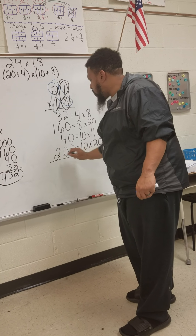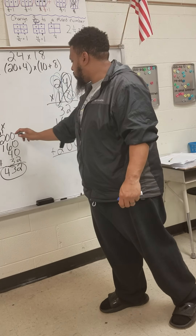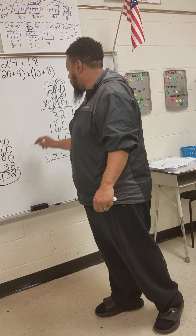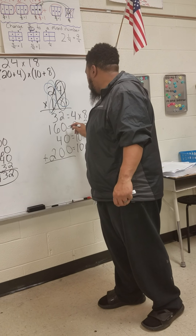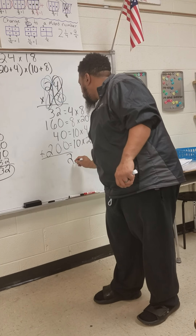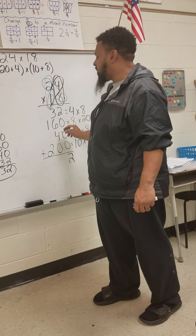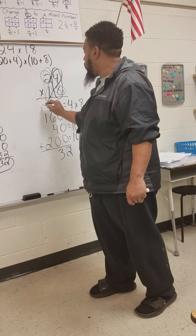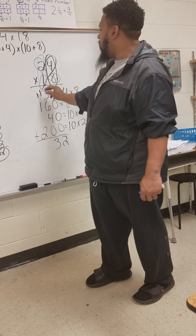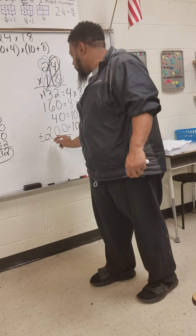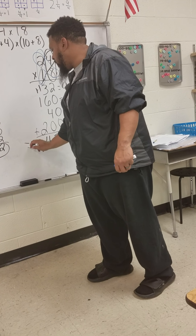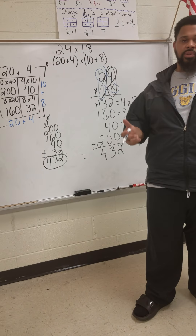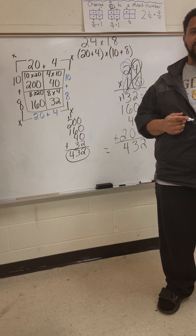If you notice, we add all these together and we got the same numbers: 200, 160, 40, and 32 — adding the same numbers up. So 2 plus 0 gives us 2, 3 plus 6 plus 4 gives us 13, we regroup the 1, then 1 plus 1 plus 2 gives us 4. Both answers are 432 using two different methods. Whichever method your child chooses to use, they may use. Thank you.